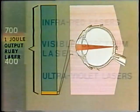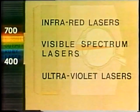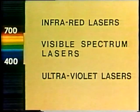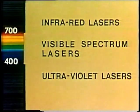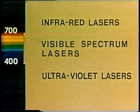Eye damage can be caused by very low energy levels. It takes only a small amount of the output of a one-joule ruby laser to cause injury to the eye. Laser radiation falls within a very narrow portion of the electromagnetic spectrum.